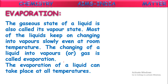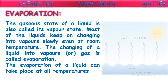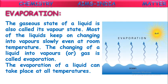So evaporation occurs at all temperatures. The evaporation of water from the ocean is shown here — not only from the ocean but from all water bodies like oceans, seas, rivers, lakes, and ponds. Due to sunlight, water will be evaporating and converts into clouds, and these clouds start converting into rain again. So in this way the water cycle occurs. This evaporation process is also part of the water cycle.